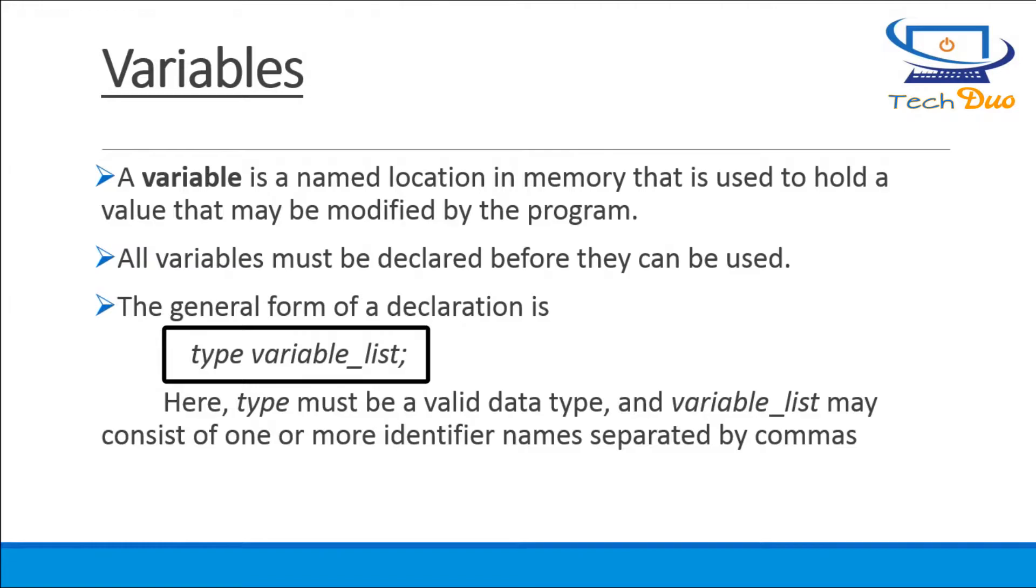The general form of a declaration is type variable list. Here, type must be a valid data type, and variable list may consist of one or more identifier names separated by commas.